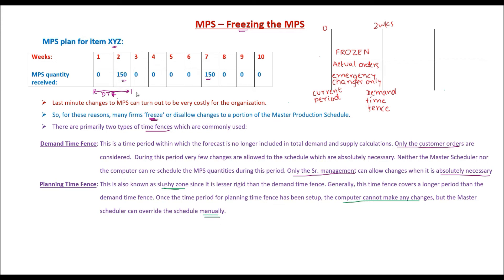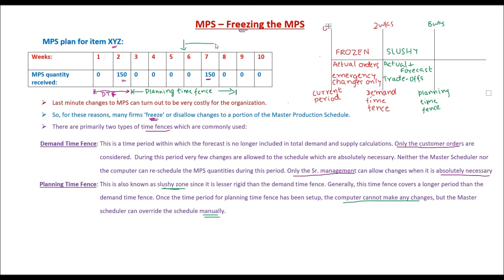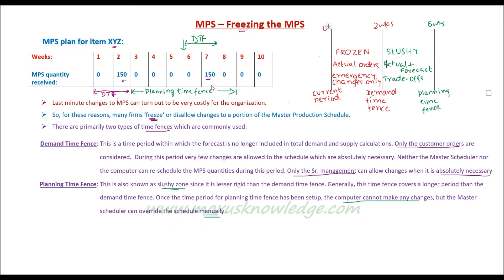As depicted on this MPS, from week three till the end of week eight is the planning time fence. An important point: as time progresses, at one point week six will become your current period, and so week six and week seven will become part of your demand time fence. So even though week seven is currently under the planning time fence and you may be able to modify the quantity of 150 slightly, as it comes closer to the current period it will become more rigid.